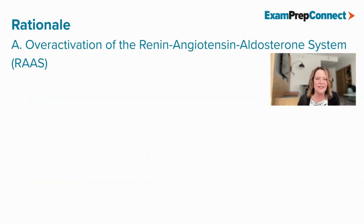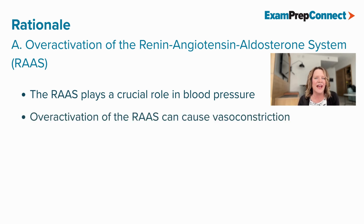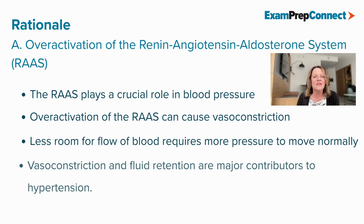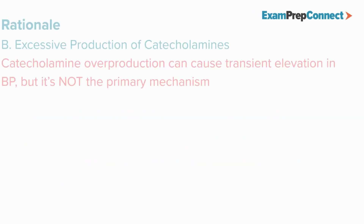A is correct because the RAAS plays a very crucial role in blood pressure, and its over-activation leads to vasoconstriction. Think about your mechanics — less room to move means you need more pressure to get it through. So vasoconstriction and fluid retention are both major contributors to hypertension.